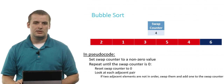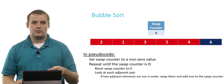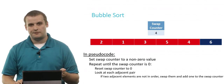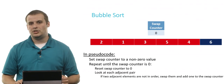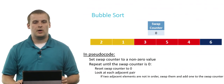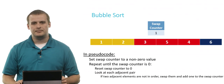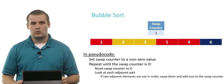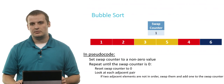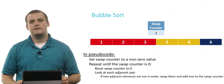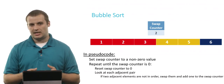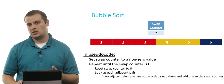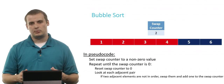We have finished one pass through bubble sort. The swap counter is four, so we're going to keep repeating. We reset the swap counter to zero and look at each adjacent pair. We start with two and one — they're out of order, so we swap them and add one to the swap counter. Two and three are in order; three and five are in order. Five and four are out of order, so we swap them and add one to the swap counter. We've now moved five, the next largest element, to the end of the unsorted portion, so we can call that part of the sorted portion.